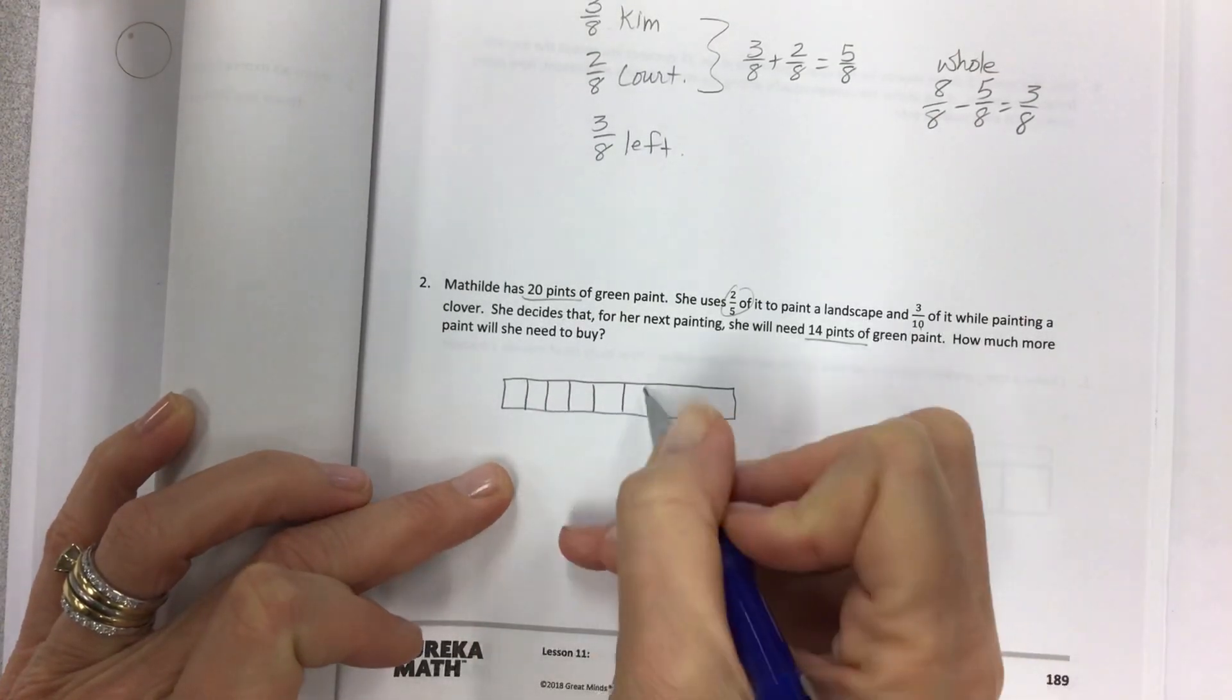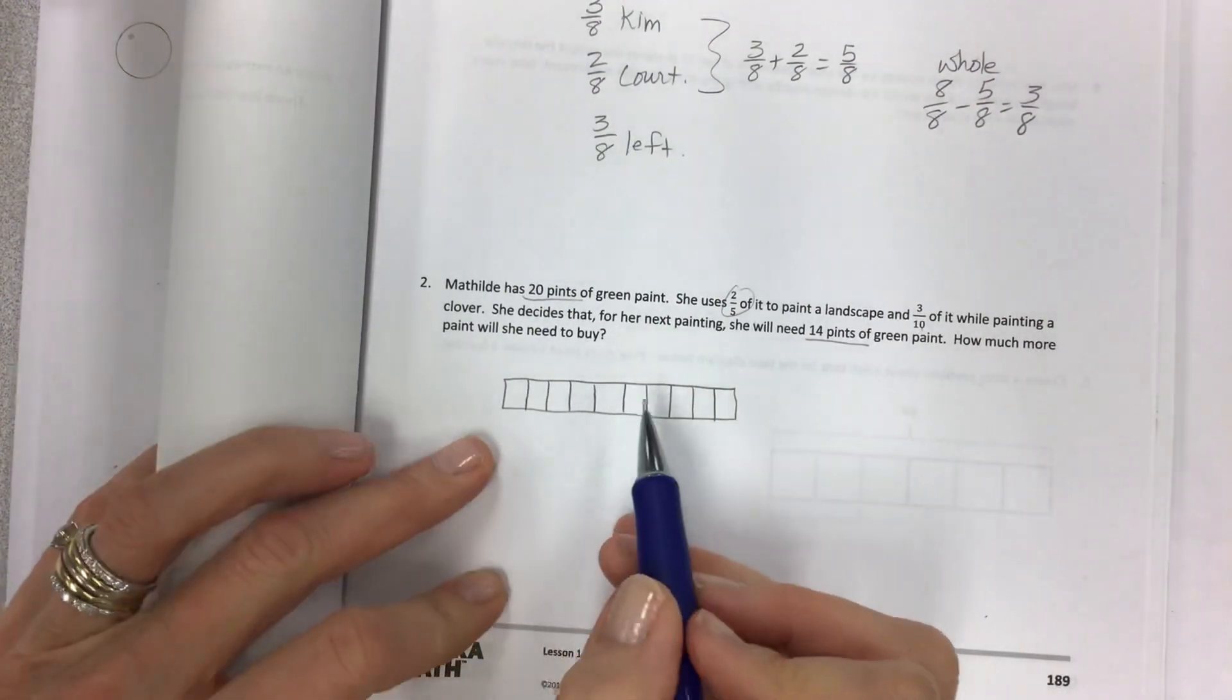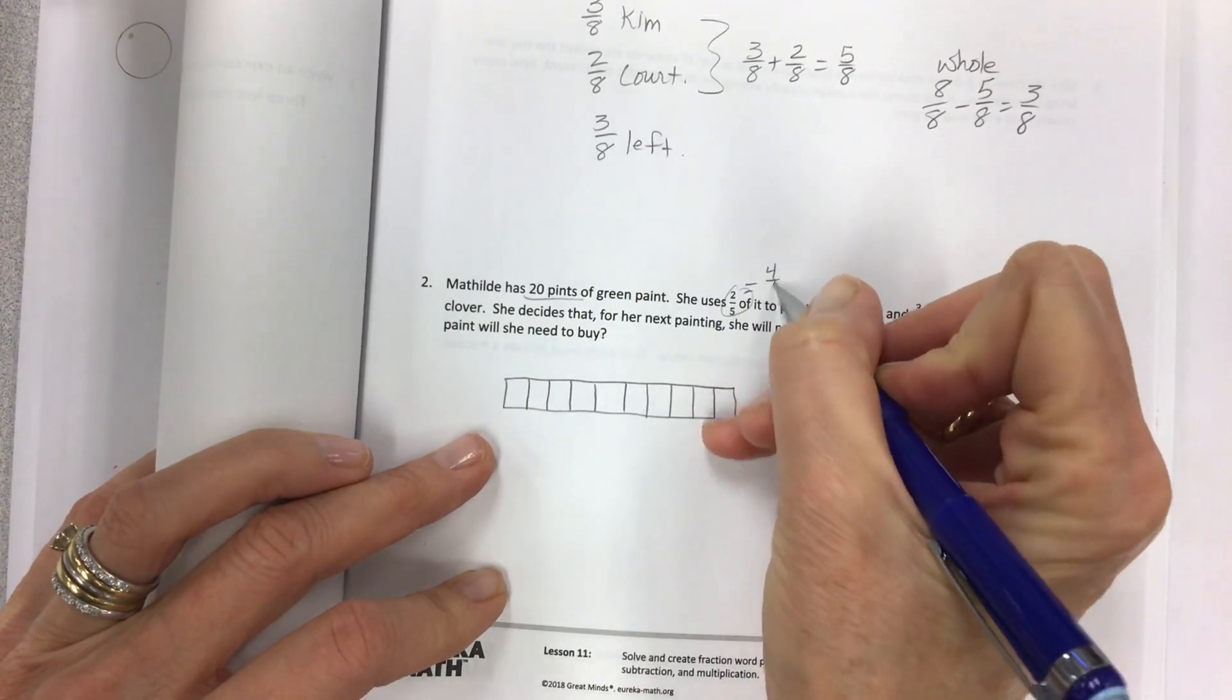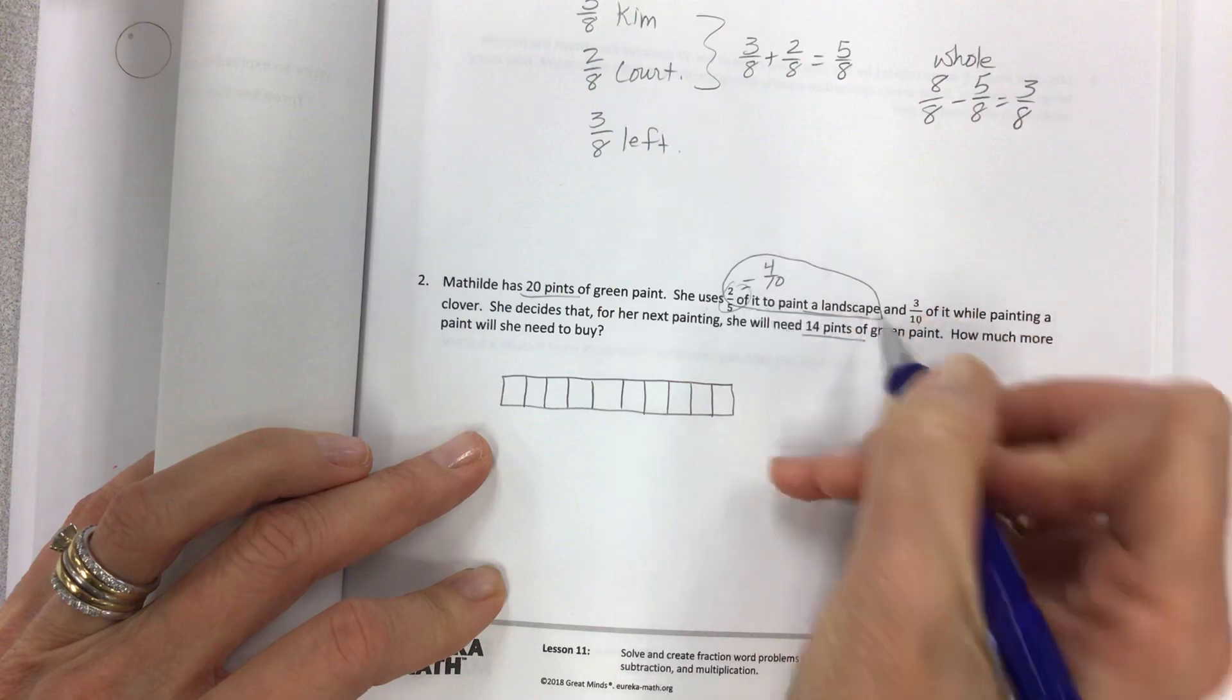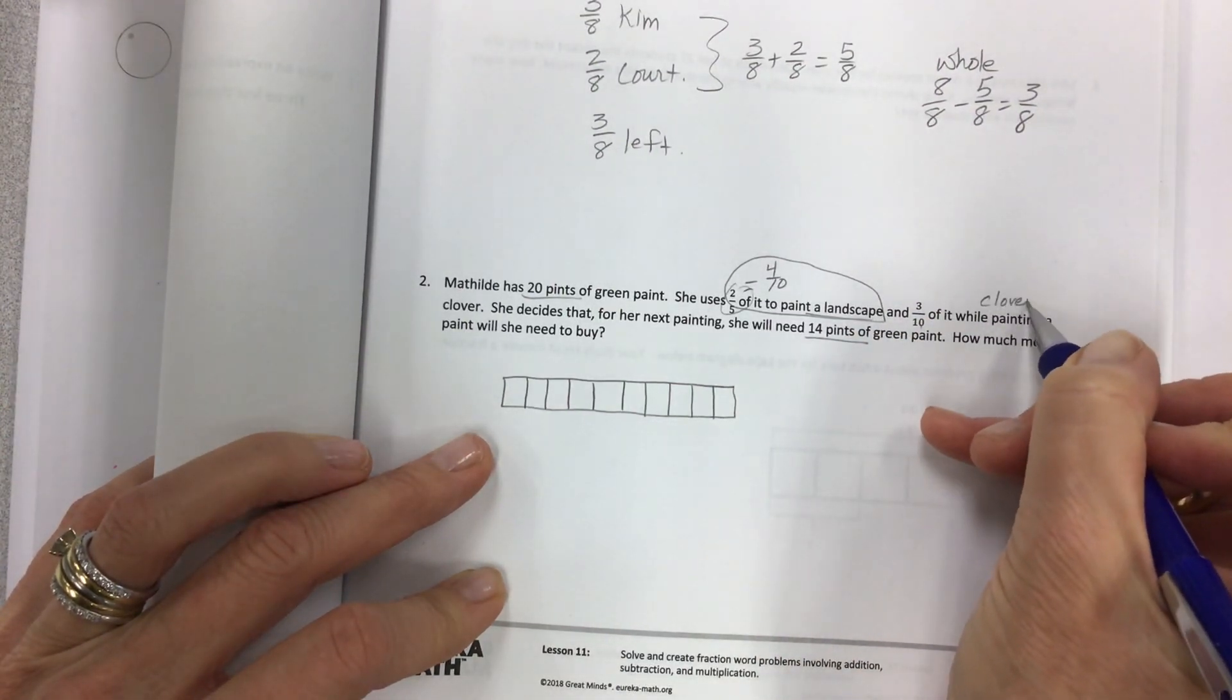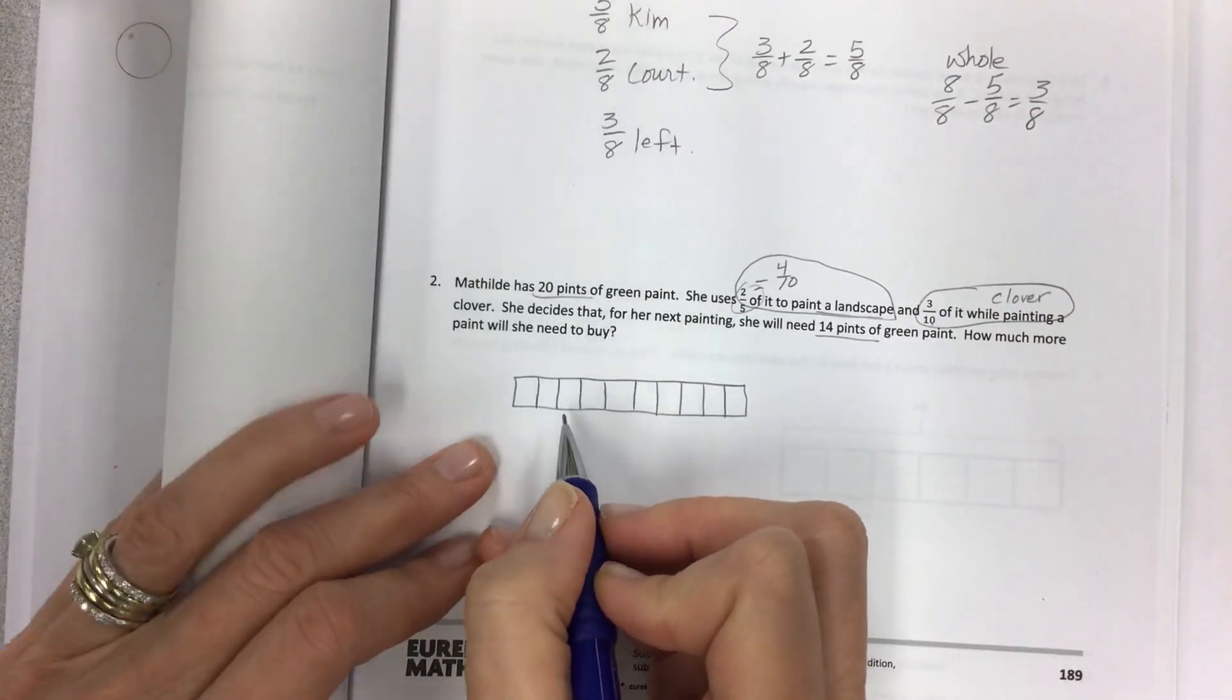Let's make a tape diagram and put it into ten pieces. Split it in half. Three, four, five. One, two, three, four, five. Close enough. Ten pieces, and so we want to have our four-tenths for the landscape.